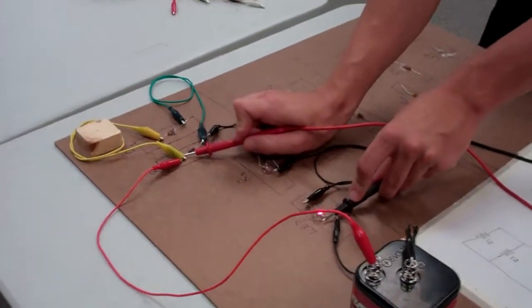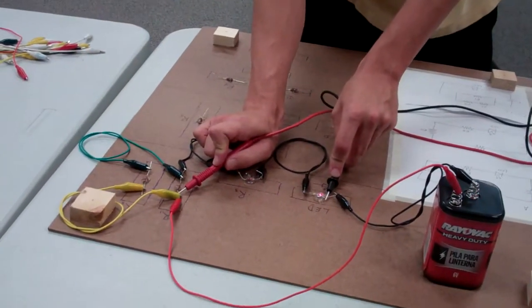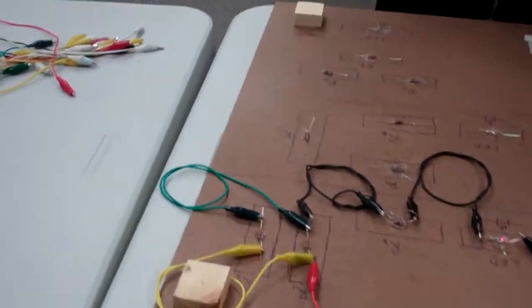Exactly. So, now we know that we have correct voltage going through the circuit. Let's look at these parallel resistors.